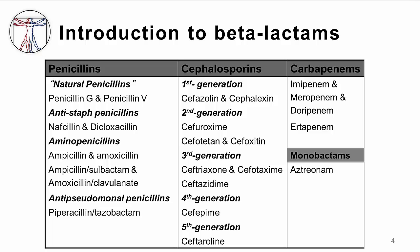Beta-lactams include a wide variety of antibiotics. Penicillins, cephalosporins, and carbapenems are all beta-lactams. Monobactams, such as aztreonam, are structurally similar, but they lack one of the two rings that beta-lactams have, and thus have little or no cross allergenicity with other beta-lactams. It is useful to group beta-lactams into these classes, which share similar characteristics.